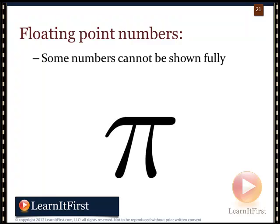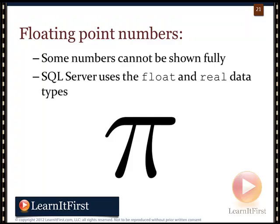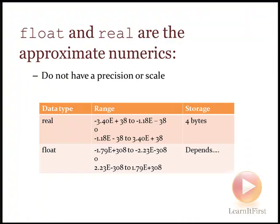Finally, floating point numbers are for values that can't be fully expressed — like pi, which has been calculated to over a hundred million digits. When SQL Server stores pi in a float or real column, what it returns is an approximation, not the exact value. Most people don't use float and real; if you don't know what floating point is, you're probably not working with it.